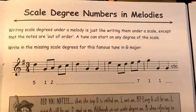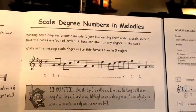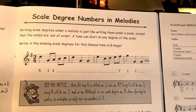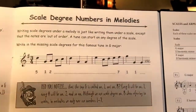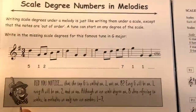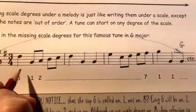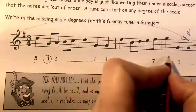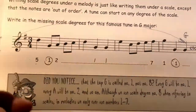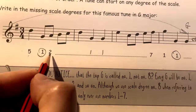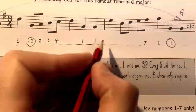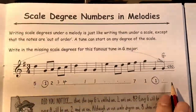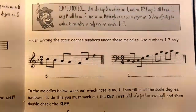We work up our scale degrees: one, two, three, four, five, six, seven, and because we're working out melody scale degrees, the top G is also number one. Writing scale degrees under a melody is just like writing them under a scale, except the notes are out of order. A tune can start on any scale degree. Fill in the missing scale degrees for this famous tune in G major — it's a famous baroque minuet.